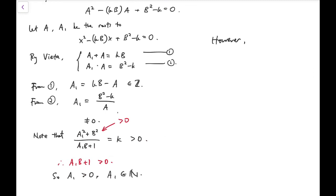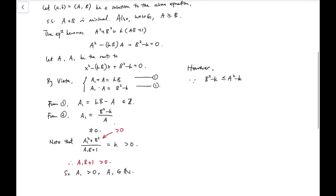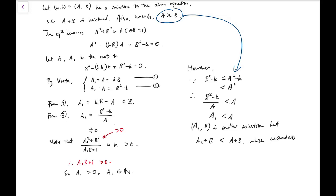However, this big A1 is in fact a smaller solution than the one that we started with. This is because B squared minus k is less than or equal to A squared minus k by the assumption that we have made without loss of generality. And this is clearly smaller than A squared. So B squared minus k over A is less than A, which means A1 is less than A. So (A1, B) is another solution, but the sum of the two numbers is less than A plus B, which contradicts its minimality.